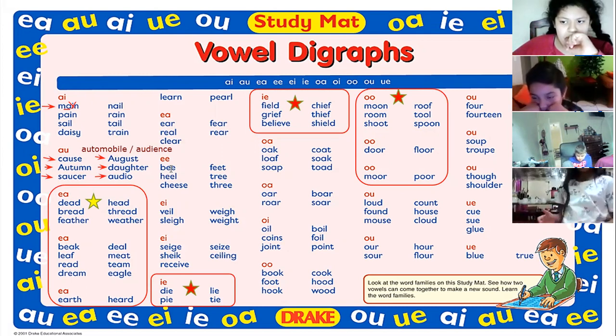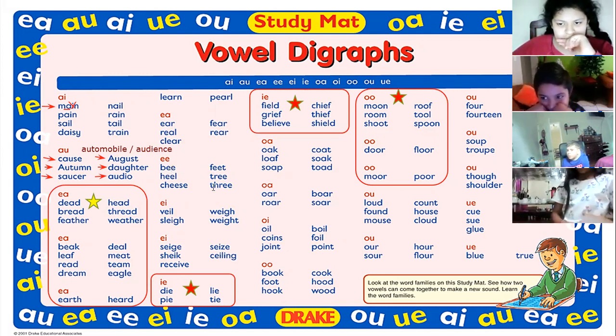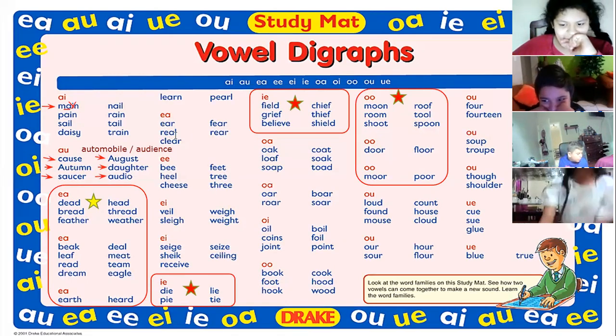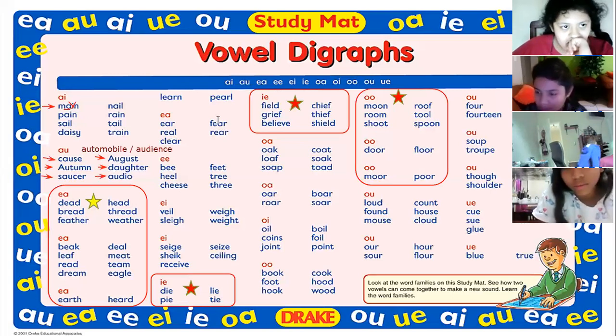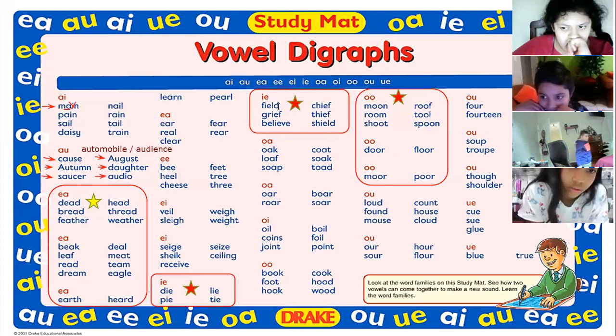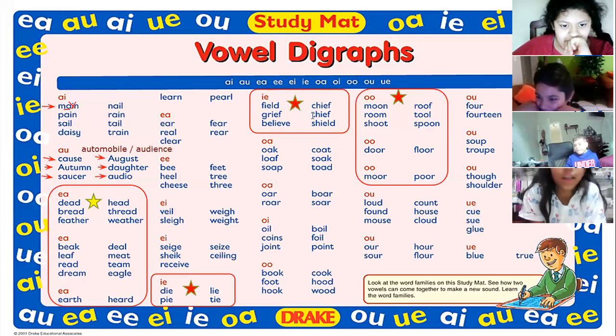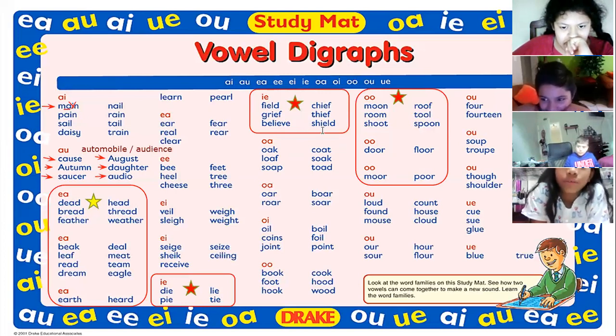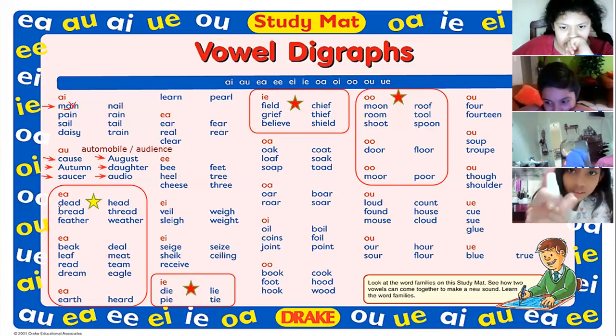This one. E-E. Long E. Heel. Cheese. Feet. Tree. Three. E-A. Ear. Real. Clear. Fear. Rear. Look at this other. This one is enclosed in a red box. Field. Grief. Believe. Thief. Teal.